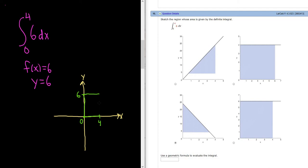So we basically have a box. So this is the area that is represented by the definite integral.